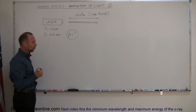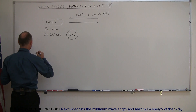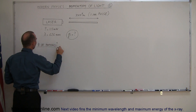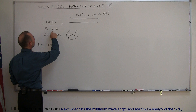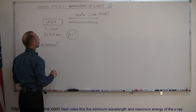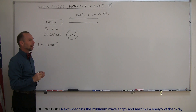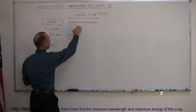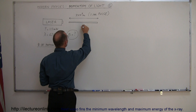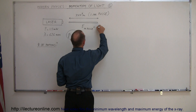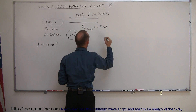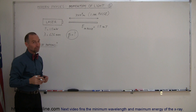Starting out with the number of photons — how do we figure that? We're told that the power is 1.5 milliwatts, which means 1.5 millijoules per second. So the energy contained within the beam — the energy in the pulse — is equal to 1.5 millijoules, because a milliwatt is a millijoule per second.